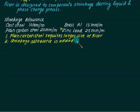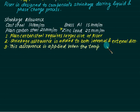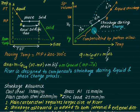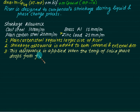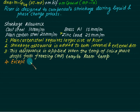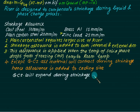Shrinkage allowance is added to both internal and external dimensions. This allowance is applied when the temperature of the solid phase drops from the freezing temperature to room temperature. Most importantly, except for gray cast iron, all materials contract during shrinkage — so the allowance is added to casting size. Gray cast iron will expand during solidification; therefore a negative allowance is provided — the allowance is subtracted.